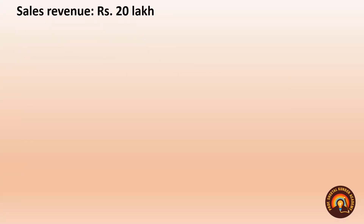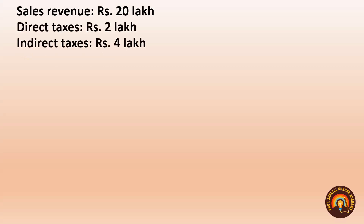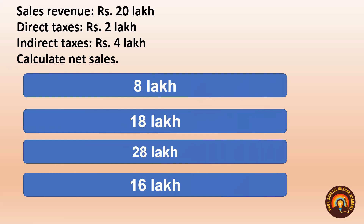Next: Sales revenue = ₹20 lakhs, Direct taxes = ₹2 lakhs, Indirect taxes = ₹4 lakhs. Calculate net sales. To find net sales, we deduct indirect taxes from total sales revenue, because direct taxes are levied on profits, not on sales. So: Net Sales = ₹20 lakhs − ₹4 lakhs = ₹16 lakhs. Net sales = ₹16 lakhs.